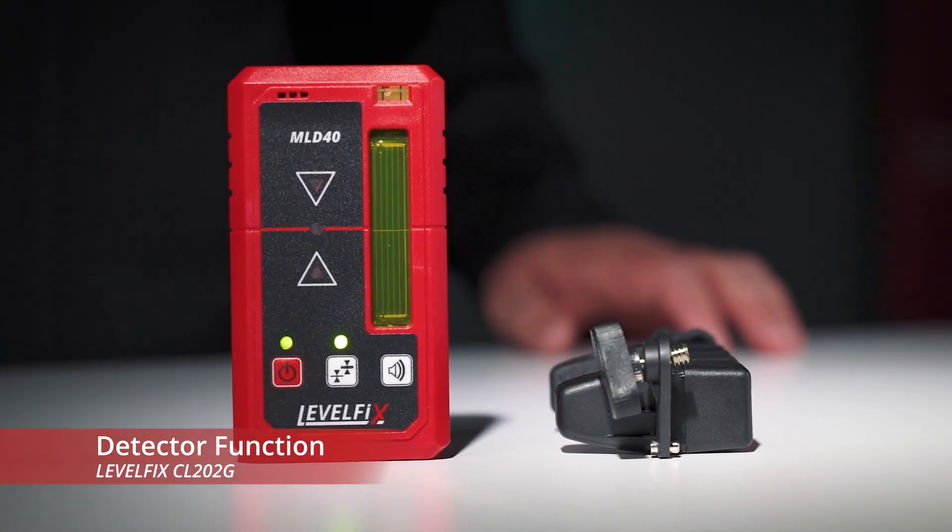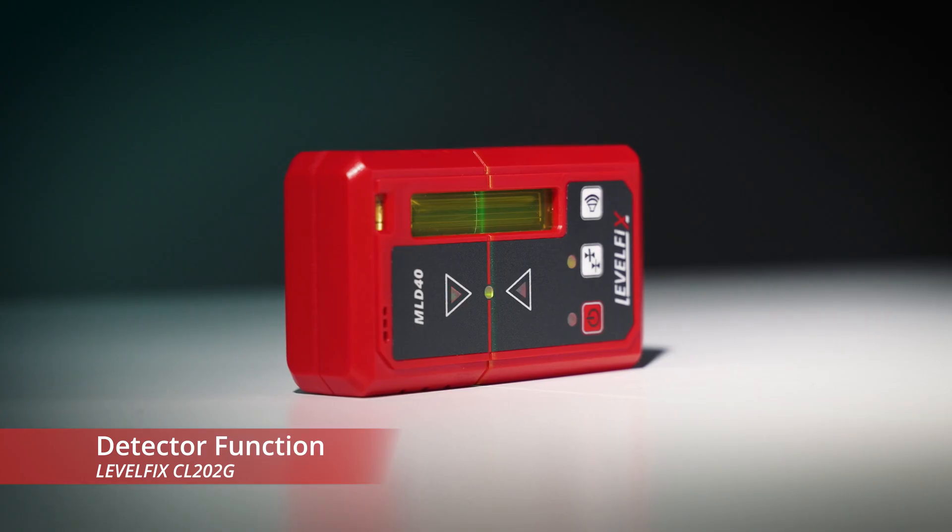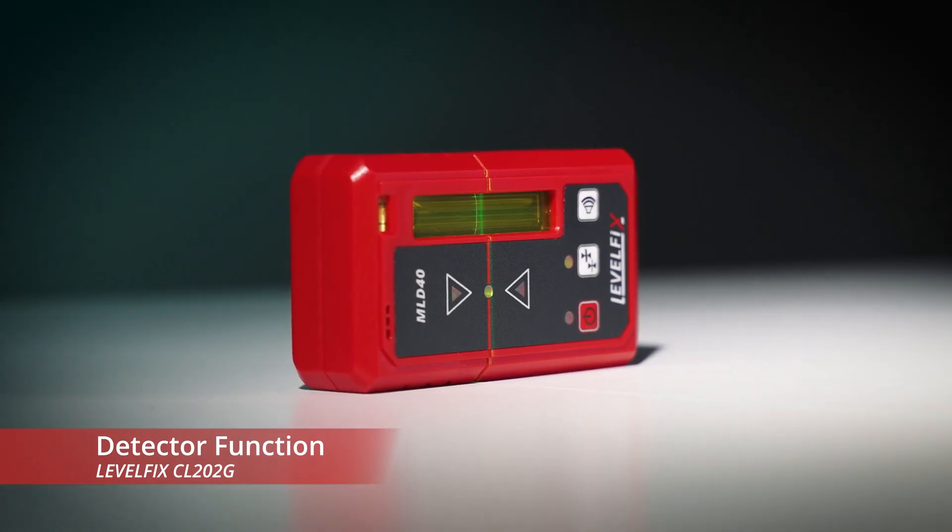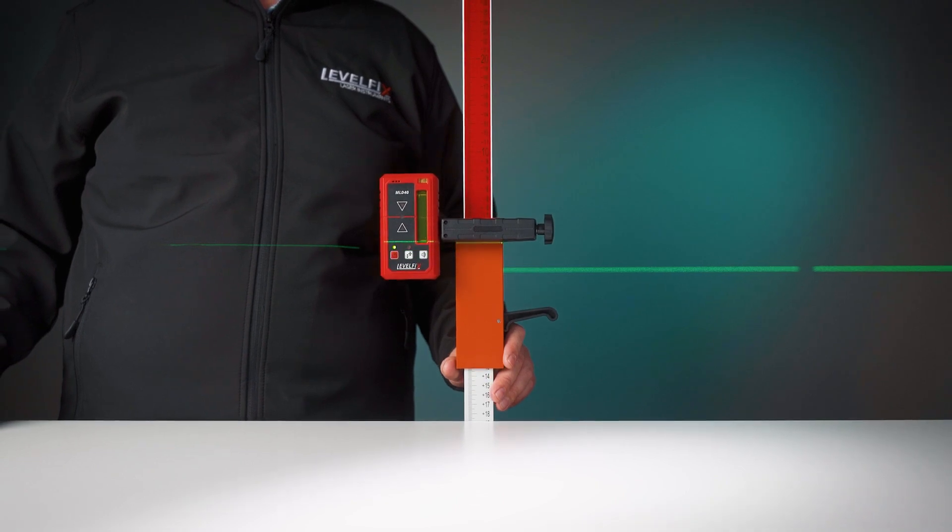The CL202G's bright green beams have a range of up to 30 meters, which can be extended to 50 meters with a detector even in outdoor light conditions.